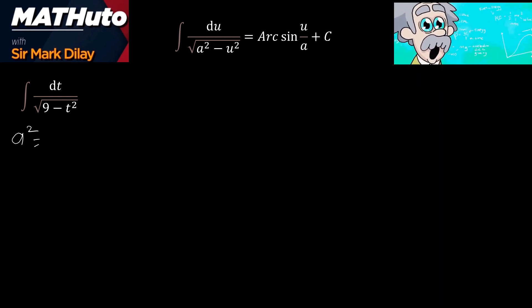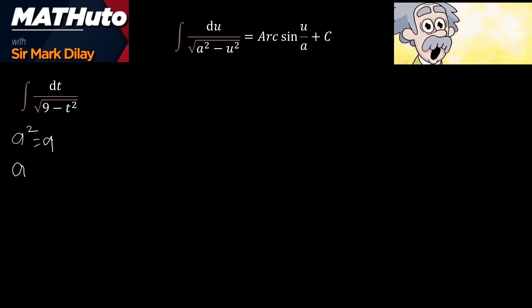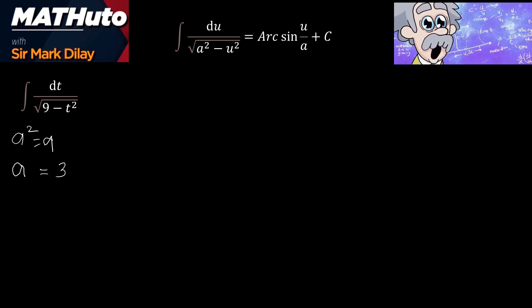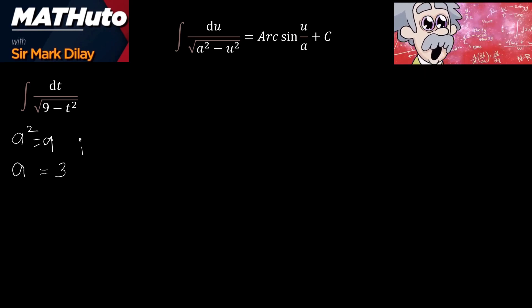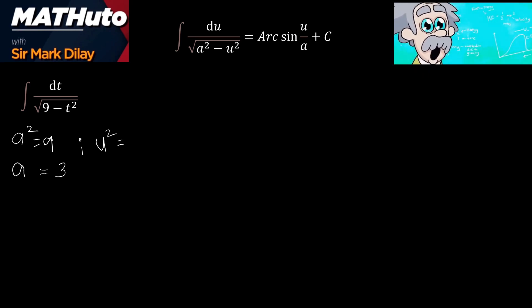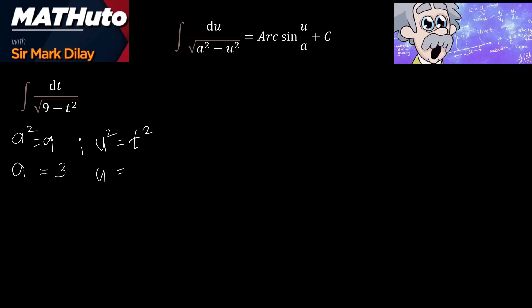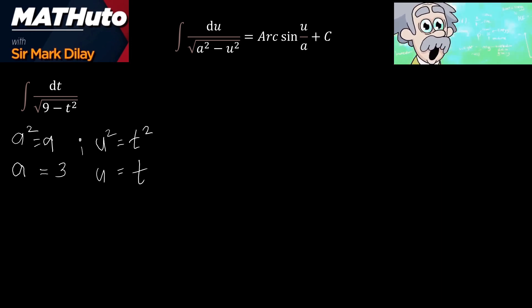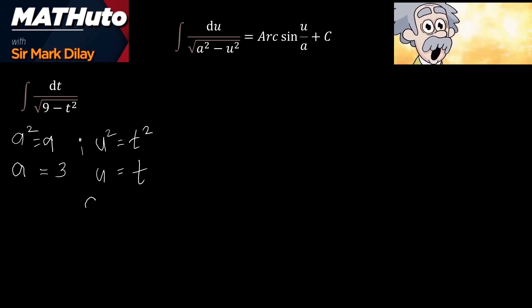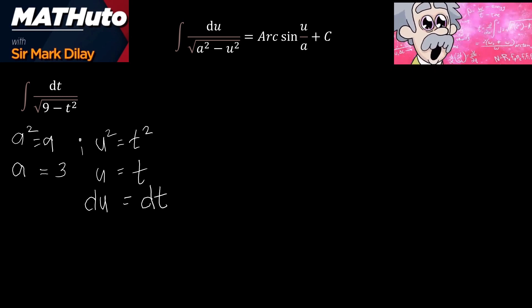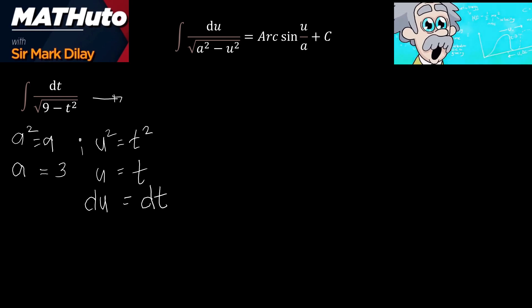The square root of a² is a, and the square root of 9 is positive or negative 3. Take only the absolute value; therefore the value of a is 3. Then, u² is equal to t². The square root of u² is u, and the square root of t² is t. Find du: the derivative of u is du, and the derivative of t is dt. Now let us proceed to substitution.